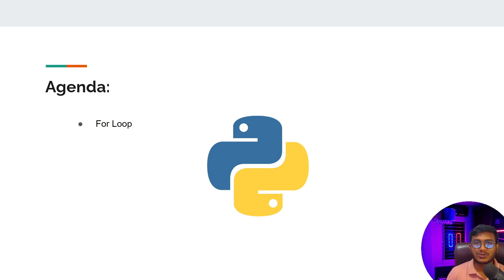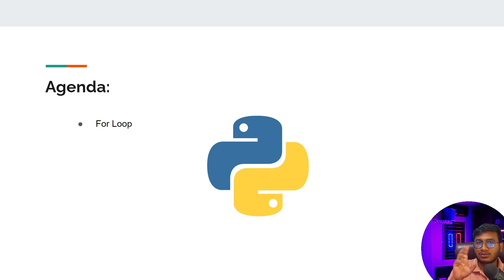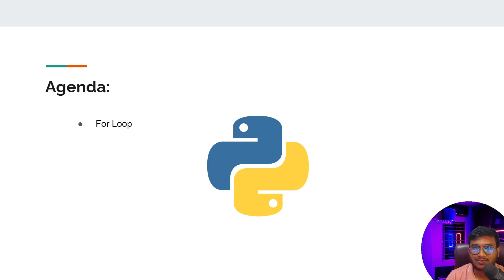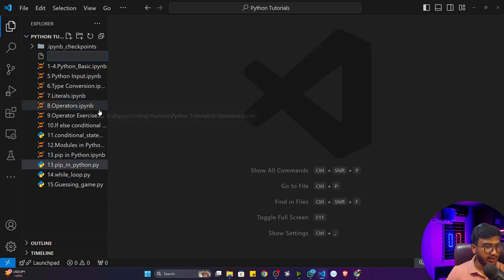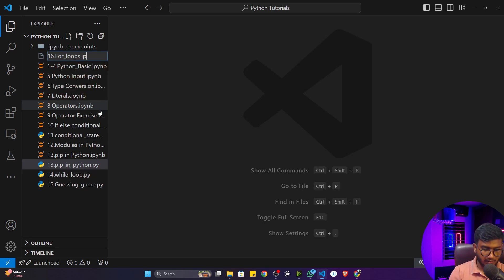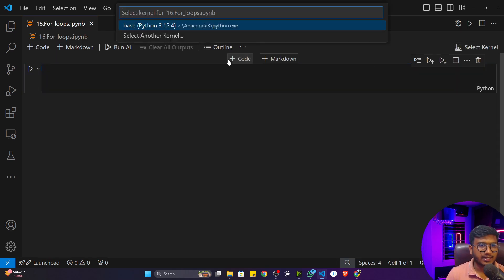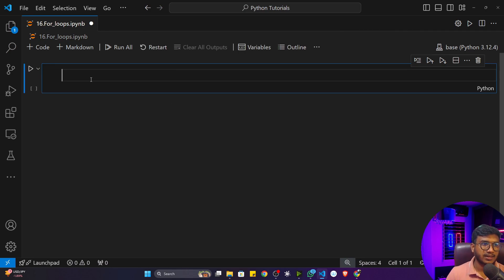Welcome to this video where we'll be discussing for loops in Python. In our previous video, we discussed the while loop, and I mentioned that Python has two kinds of loops: while loop and for loop. In this video, we'll understand for loop with examples to make the concept clear. I'm going to create a new file named '16_for_loop.ipynb' and select the base kernel.